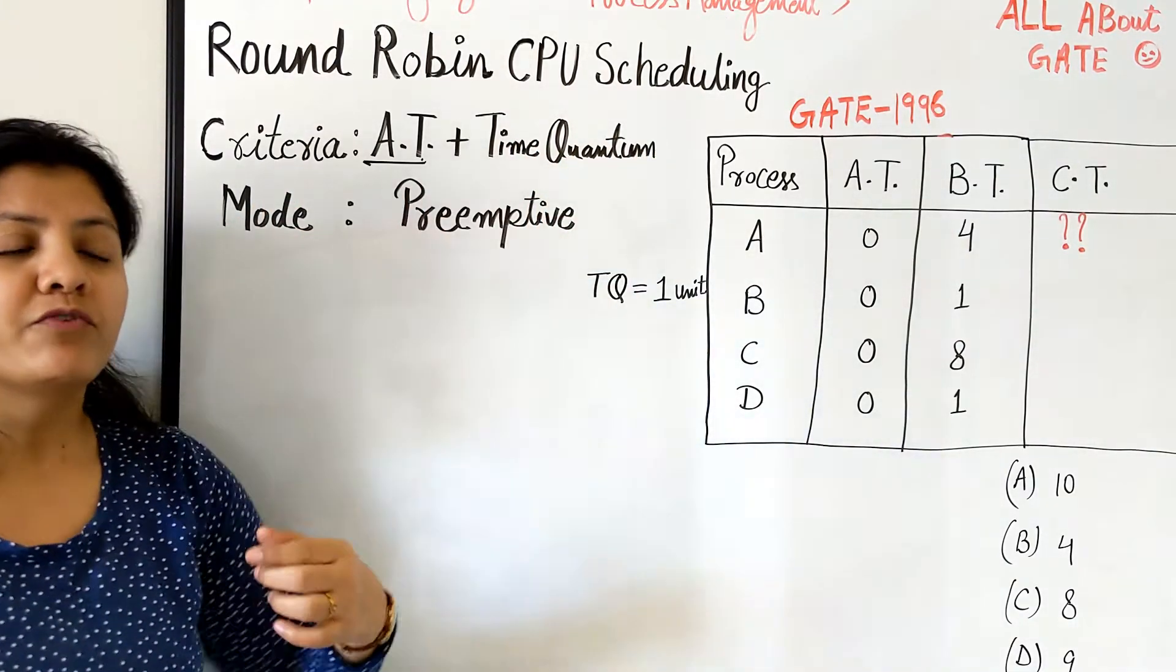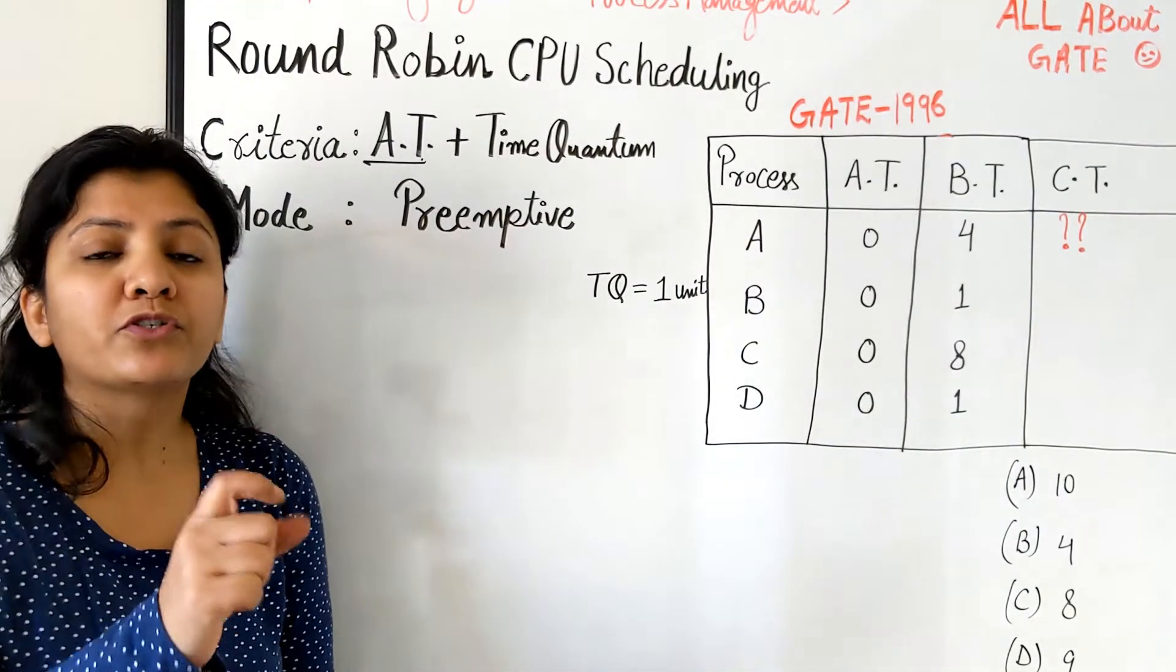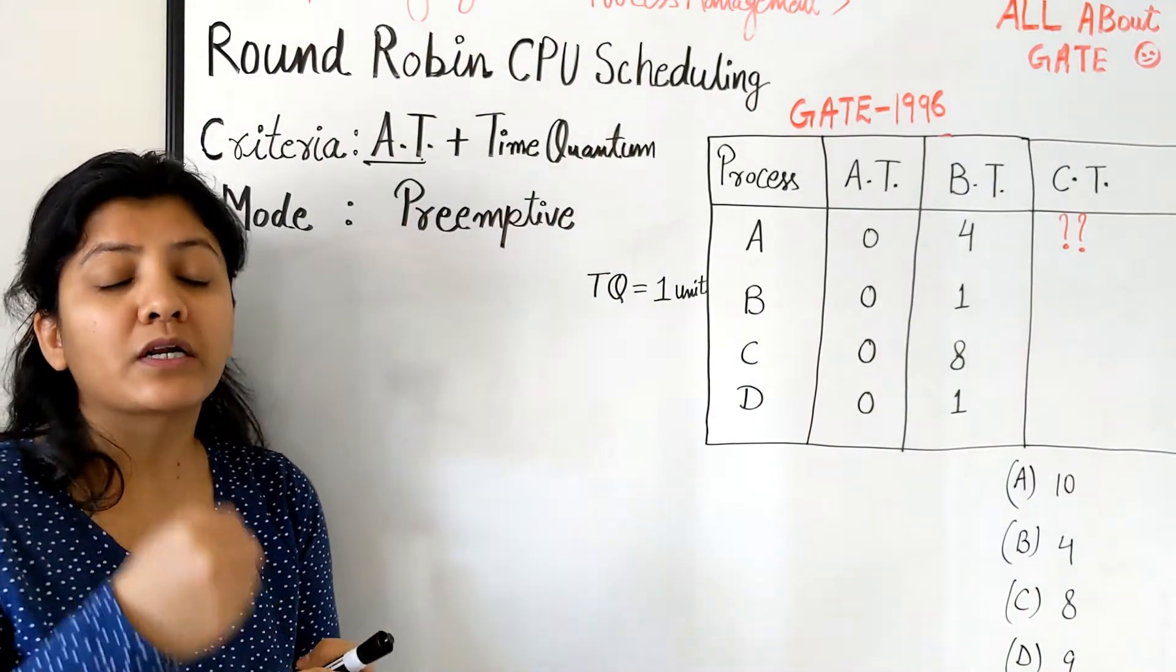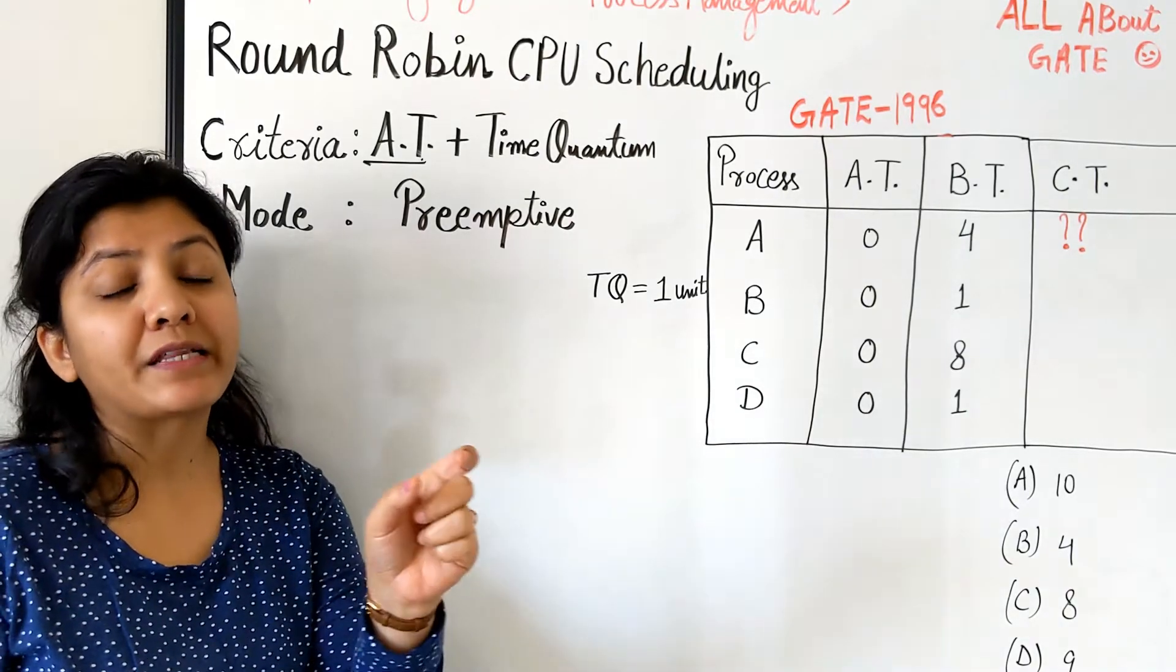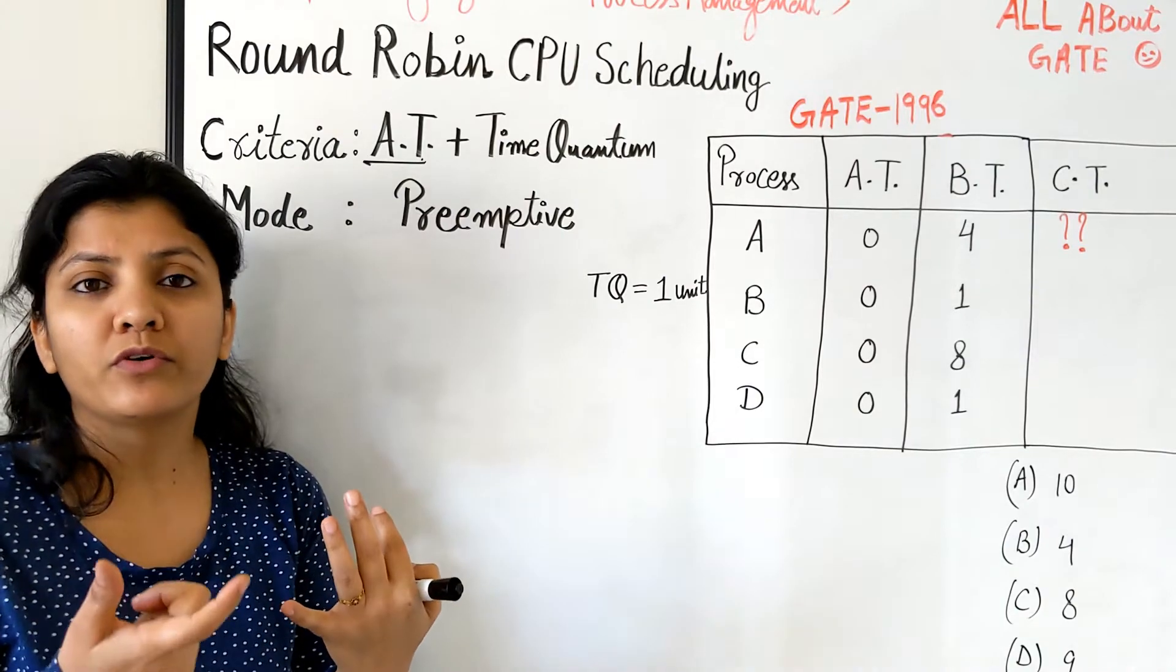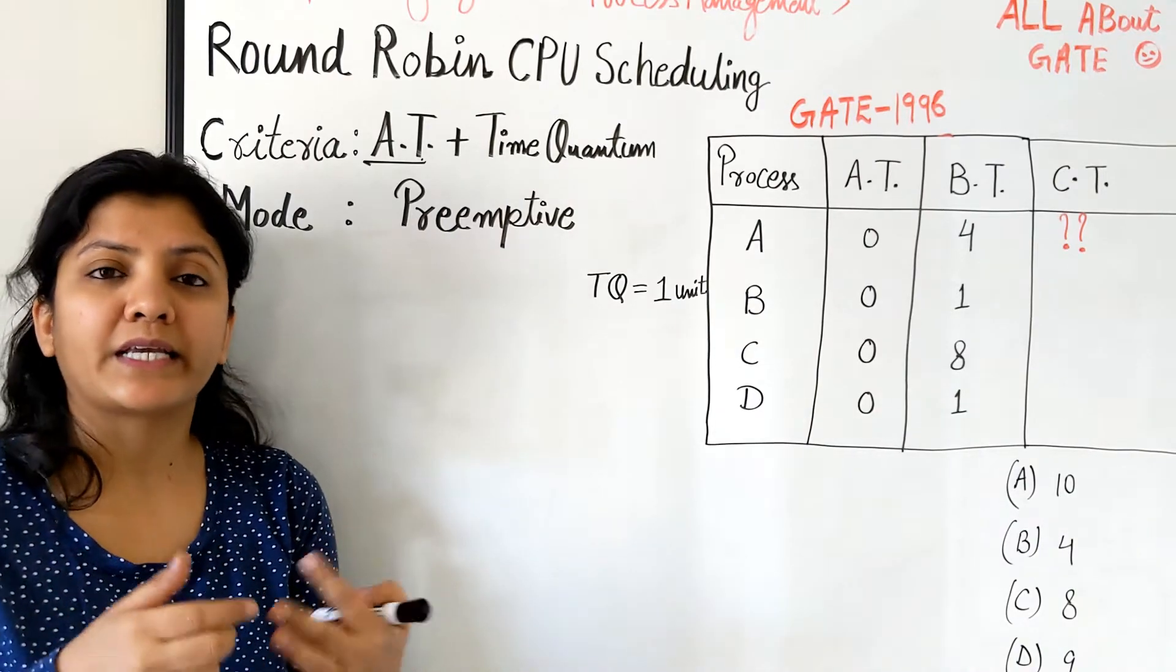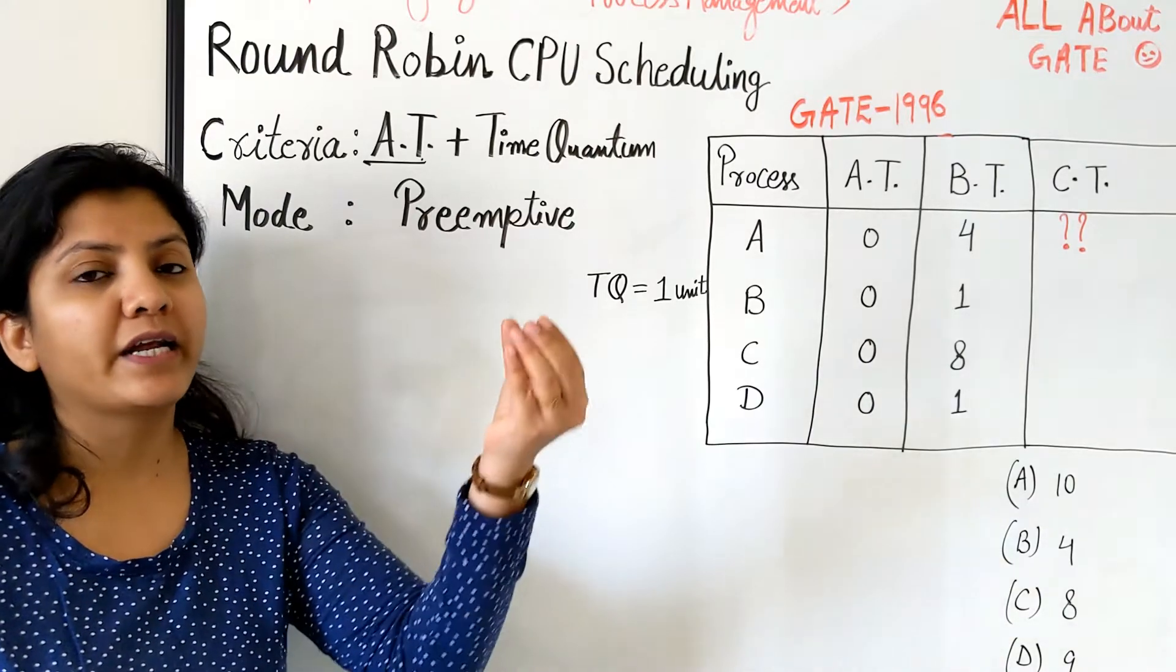So it works on the time quantum which is also known as a time slice. Basically what happens is the CPU scheduler will have a timer. The implementation of round robin scheduling algorithm externally requires extra hardware, that is a timer. So that timer will get set with a value which could be anything. A time quantum could be two units of execution, it could be one unit, it could be three units, like three milliseconds, two milliseconds, whatever is a unit of execution on your CPU. That will get set to it.